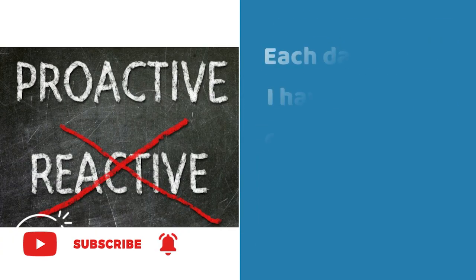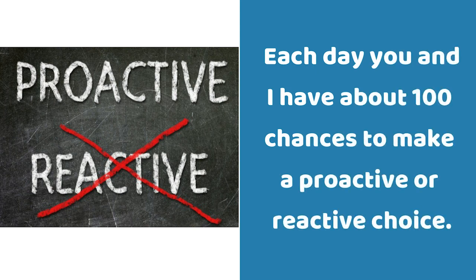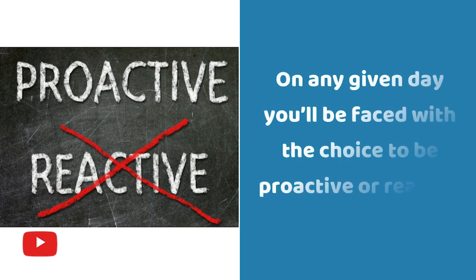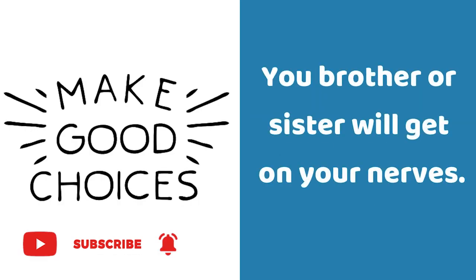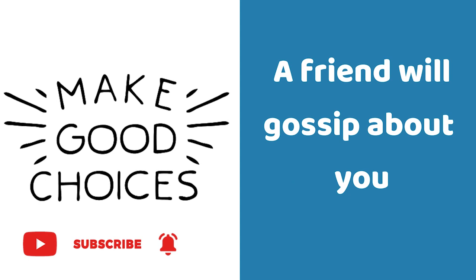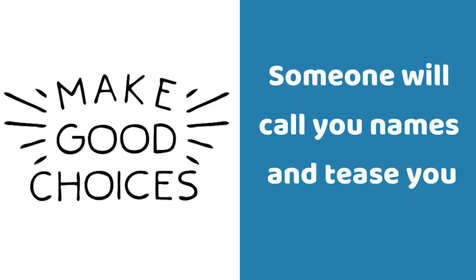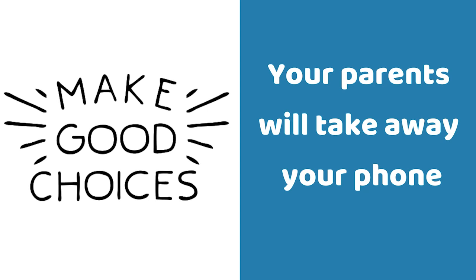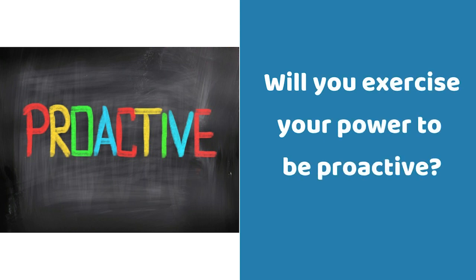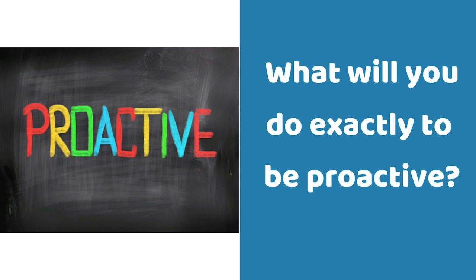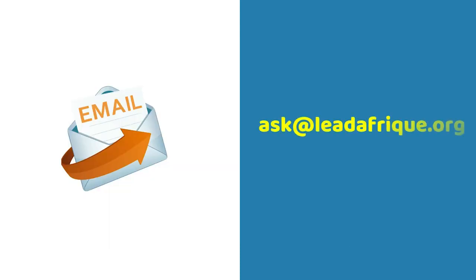Each day, you and I have about 100 chances to make a proactive or reactive choice. On any given day you'll be faced with a choice to be proactive or reactive. The weather can be bad, your brother or sister will get on your nerves, a friend will gossip about you, someone will call you names and tease you, your parents will take away your phone, or you may even fail a test. What are you going to do about it? Will you exercise your power to be proactive?